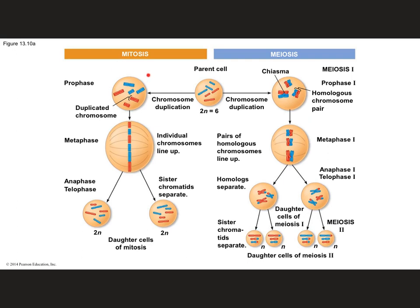Let's compare and contrast mitosis and meiosis. Both mitosis and meiosis have duplication of the chromosomes prior to entering into mitosis or prior to entering into meiosis one. This duplication of the chromosomes — DNA replication — occurs in interphase of the cell cycle. Both mitosis and meiosis also include the phases of prophase, metaphase, anaphase, and telophase.